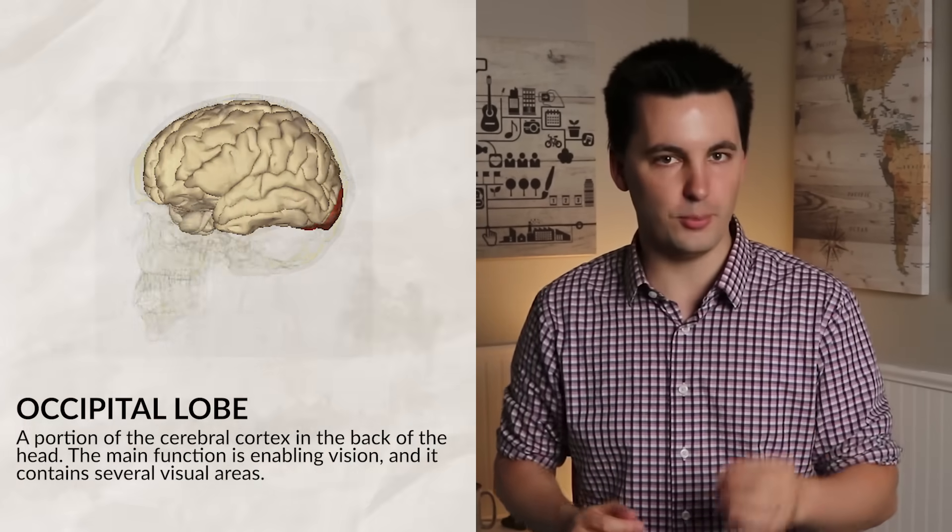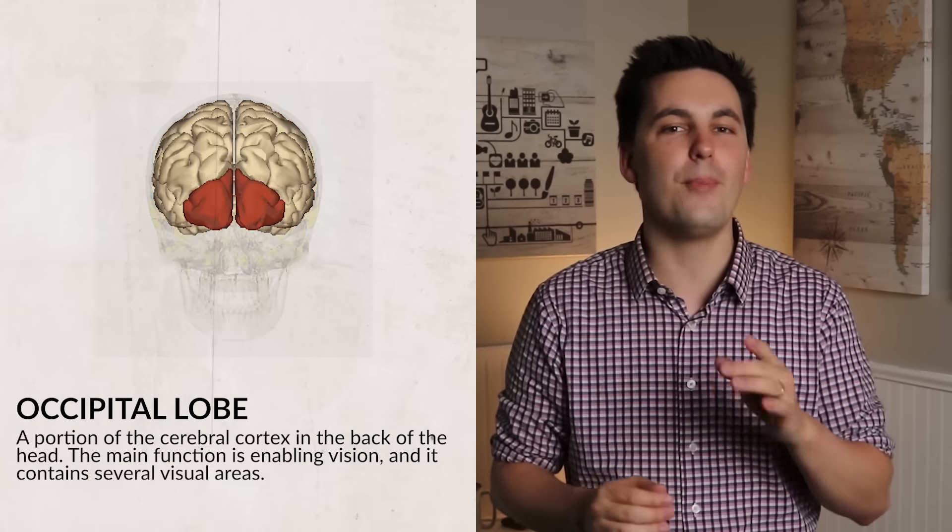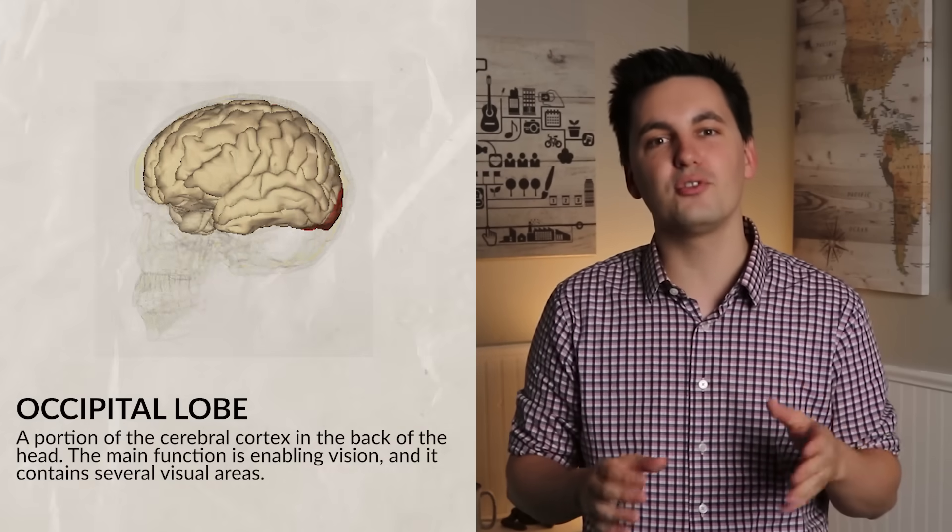Behind the parietal lobe is the occipital lobe. This is the lobe that makes it possible for you to see. This is located in the back of your head. Here, you also have your visual cortex. Now, if you're struggling to remember where this is located, just try to remember the saying, they've got eyes in the back of their head.